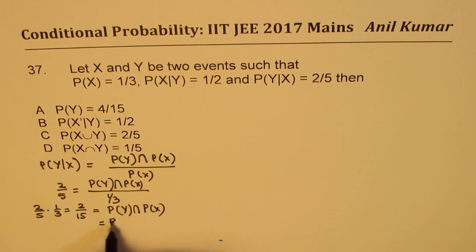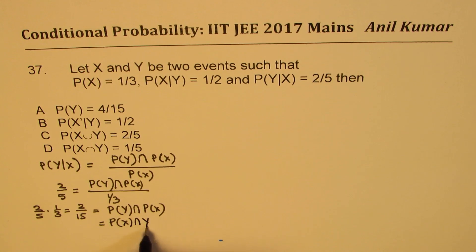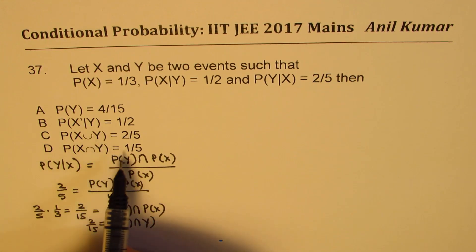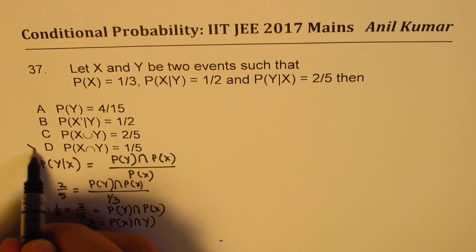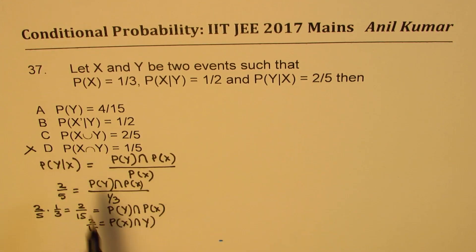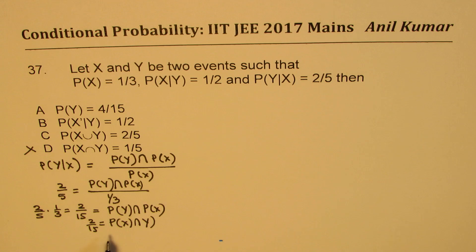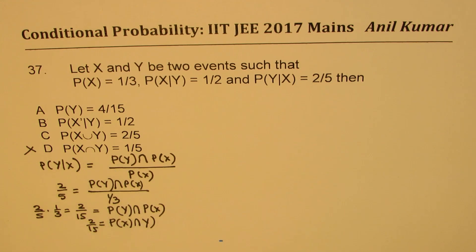So probability of X intersection Y is two over 15, which clearly shows that the answer suggesting it is one over five is incorrect.